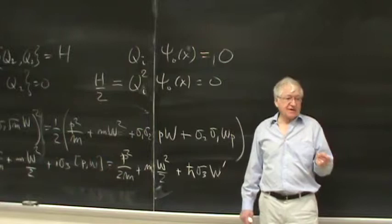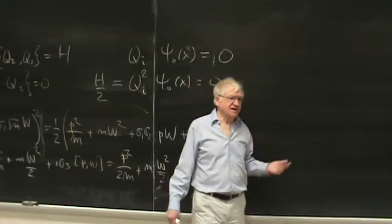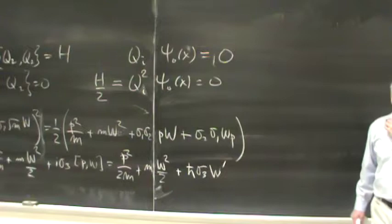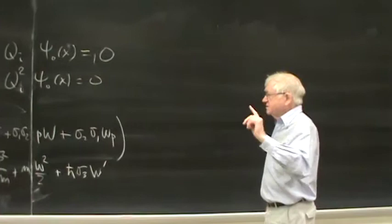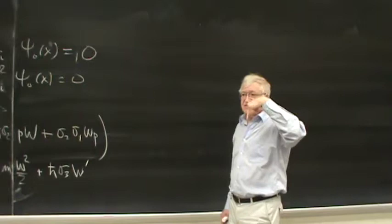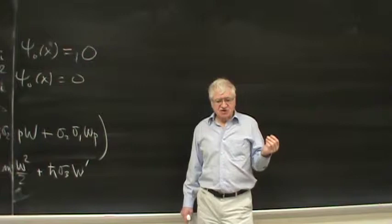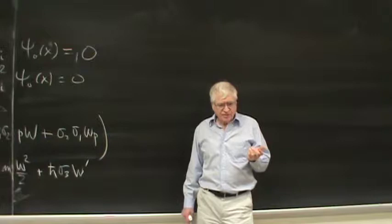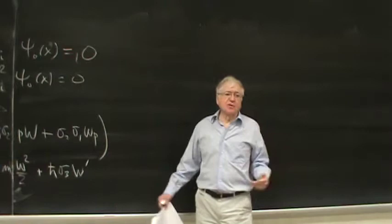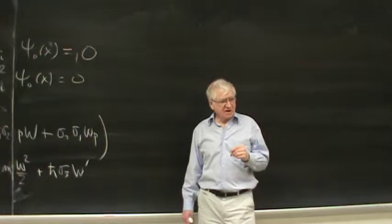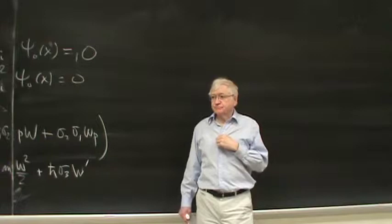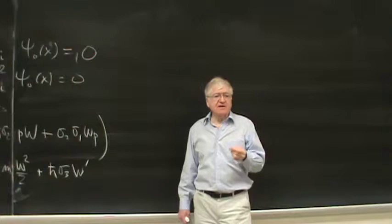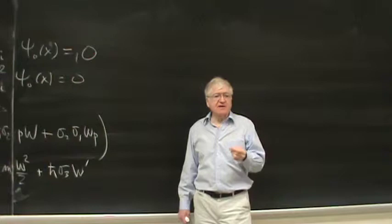Unfortunately, when you break supersymmetry you get back to very large values — though actually it's still better. In broken supersymmetry, if broken in some reasonable way, there are equal numbers of boson and fermion fields. So the quartic divergence is gone; the worst you have is a quadratic divergence — infinity squared rather than infinity to the fourth.